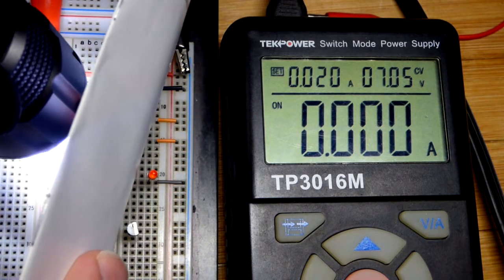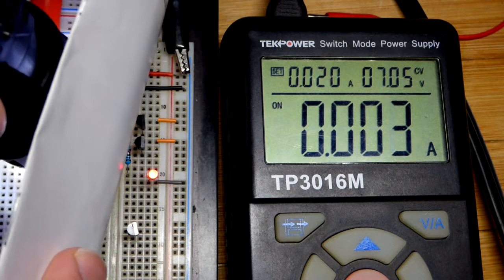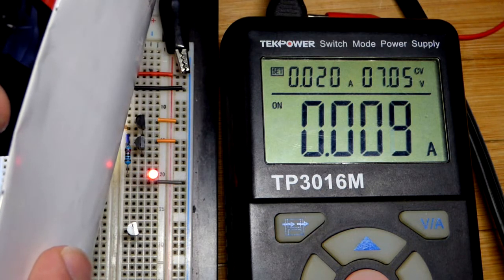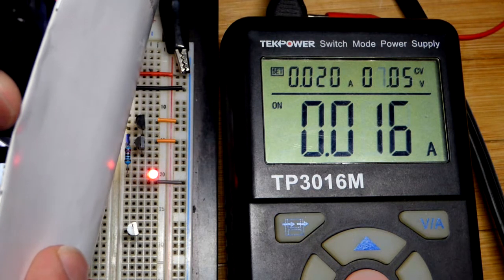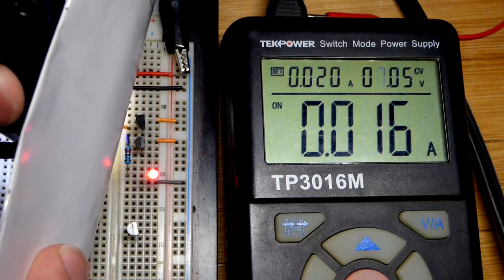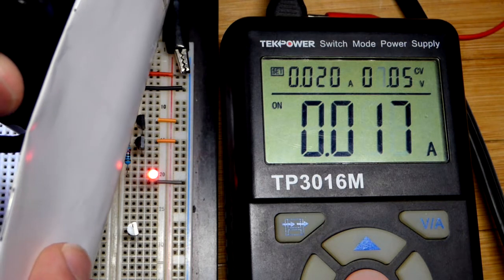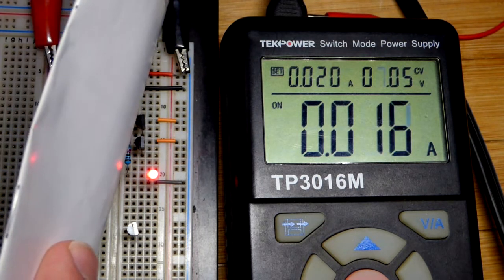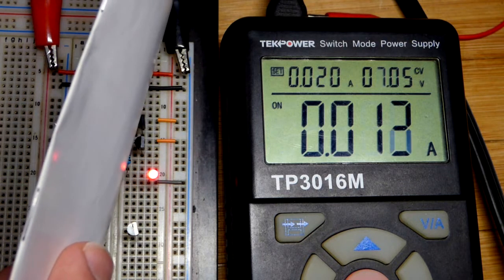In the last video we looked at how shining bright light on three series LEDs can build up a voltage, but it's not enough to power a load itself. But we can use a couple NPN bipolar junction transistors wired as a Darlington pair to transfer that voltage.